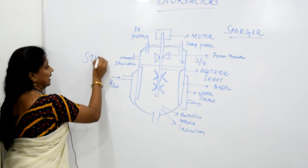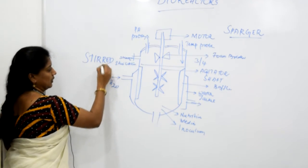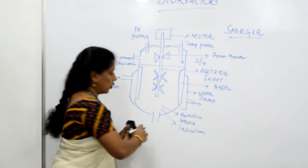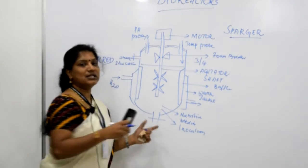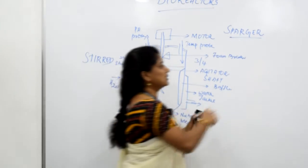This is the first type which we saw right now which is the stirred type of bioreactors. The product which is being formed can be taken by this way and this is called stirred type.